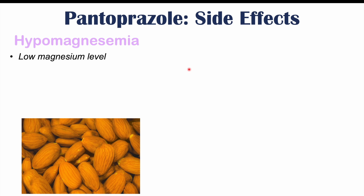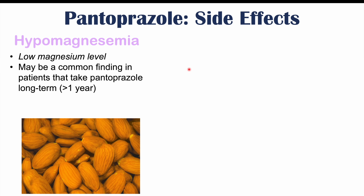An important nutrient issue with pantoprazole use is hypomagnesemia, which is a low magnesium level in the blood. This is thought to be a rarer occurrence, but patients in hospital on a proton pump inhibitor for long periods may have lower magnesium levels than they should. Hypomagnesemia is more commonly seen in patients who have been taking pantoprazole long-term, generally more than a year. If patients are also on a diuretic like furosemide, they are at an even higher risk, as both the drug and the diuretic can lower magnesium levels.